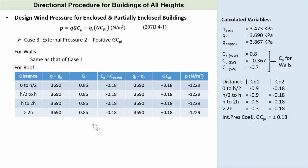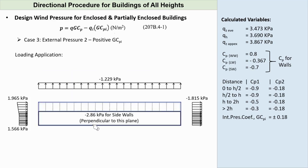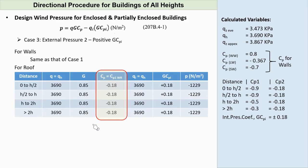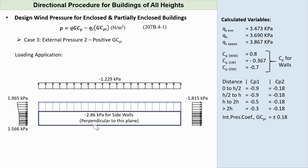Case 3, External Pressure 2 minus Positive GCPI. Wind pressures for walls are the same as in Case 1. But for the windward roof, we will use the second value of external pressure CP2, which is negative 0.18. By doing so, we get P for the roof equals negative 1,229 pascals. Knowing all the surface pressures, we can draw the wind action for Case 3.